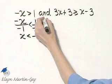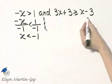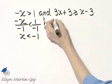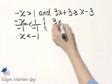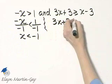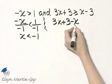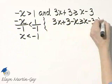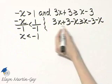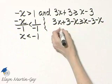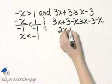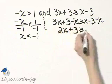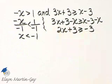Now let's continue with the other inequality. How do I solve this? I will subtract x from both sides. So I have 3x plus 3. I'll subtract x from the left side and now I'll subtract x from the right side. Notice on the left side, 3x minus x, that's 2x plus 3 greater than or equal to negative 3.